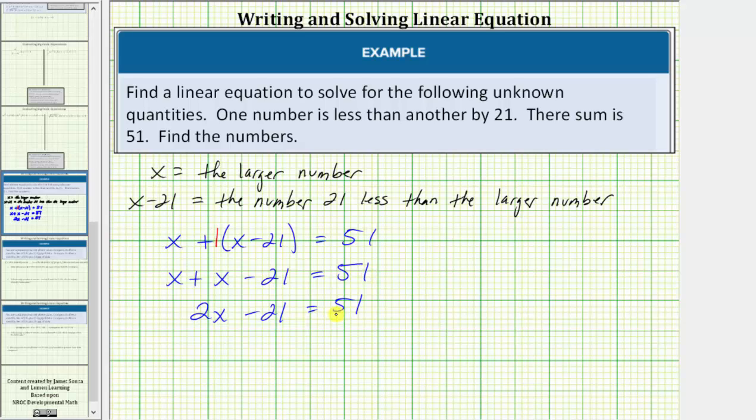And now to solve for x, the first step is to isolate the variable term by adding twenty-one to both sides. This will undo the subtraction on the left side. Simplifying, negative twenty-one plus twenty-one is zero. The equation simplifies to two x equals seventy-two.